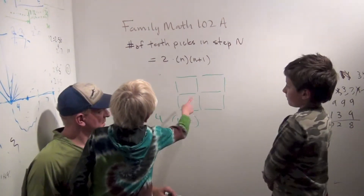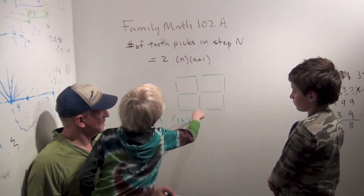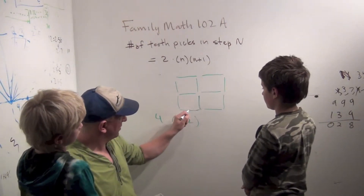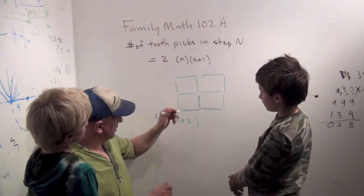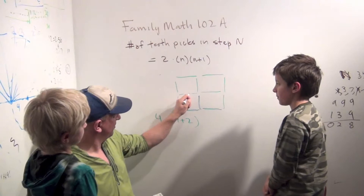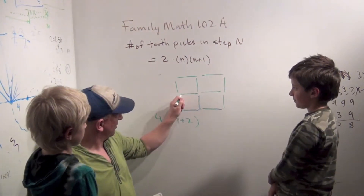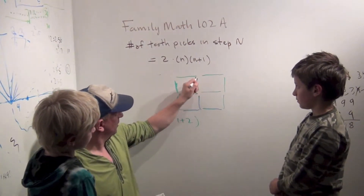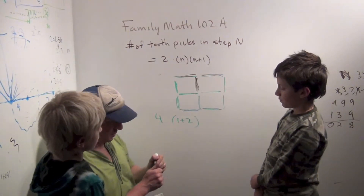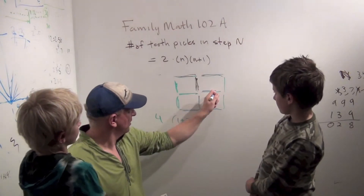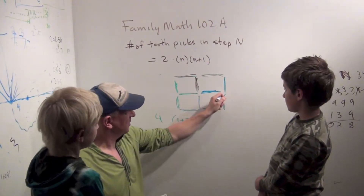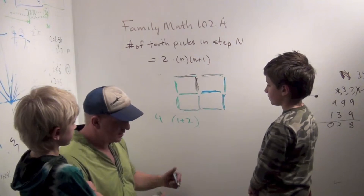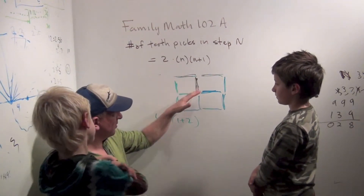What do you see for 2's and 1's here? I see that, that, that, and that. So this first one was this and this — that was 1 plus 2. And then in green: 1 plus 2. In brown: 1 plus 2. In light blue: 1 plus 2. So we found the four 1 plus 2's.